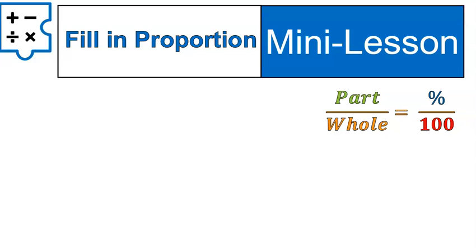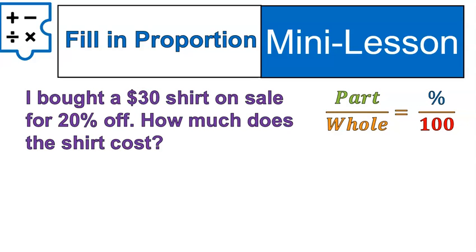The hardest part is filling in this proportion. You have solved proportions for many lessons now — we solved them in our unit on fractions. So filling in the proportion is really what's new and challenging here. Let's try it out with a word problem: I bought a $30 shirt on sale for 20 percent off. How much does the shirt cost? Take all the pieces of information and try to fill in the proportion — the part, the whole, the percent.